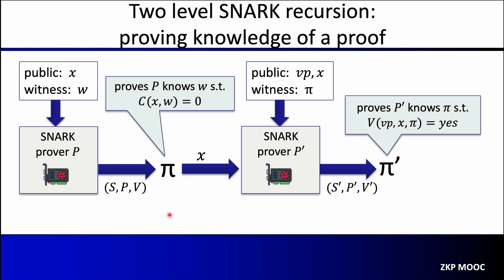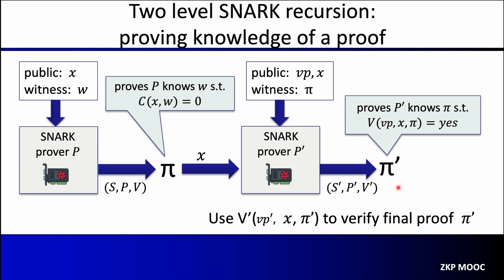The first system — what we'll often call the inner system — is proving knowledge of a witness W relative to the circuit C. The outer system S', P', V' is producing a proof relative to a circuit that implements the verification algorithm V of the inner system. So pi prime is a recursive proof because we're proving knowledge of a proof rather than directly proving knowledge of a witness.